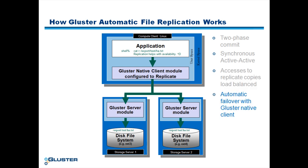Up to now, we have talked about error-free operations. With replicate volumes, we also support automatic failover in the event of server failure. If storage server 1 fails midway while serving a file operation, storage server 2 will seamlessly take over and complete that operation.